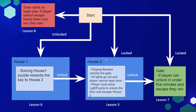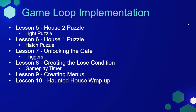This will be defined in lesson five, which is the next lesson. And then in lesson seven, we're going to go through the steps for setting up the gate so the player can get close to the gate and unlock it and escape from the level. So this is the breakdown of the remainder of this week. In lesson five, we're going to create the house two puzzle, which I'm calling the light puzzle. In lesson six, we're going to create the house one puzzle, which I'm calling the hatch puzzle. In lesson seven, we're going to go over unlocking the gate using triggers. In lesson eight, we'll create the losing condition, which is going to be a gameplay timer that ticks down over time while the player is playing. In lesson nine, we'll create some menus for our player to interact with when they launch the game. And then in lesson ten, we'll wrap everything up and go over everything we've covered in the last two weeks.